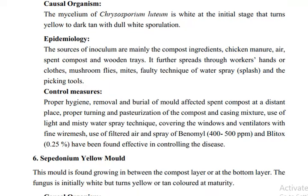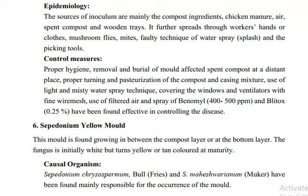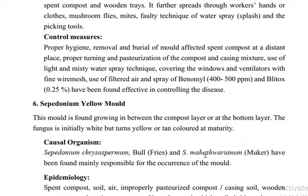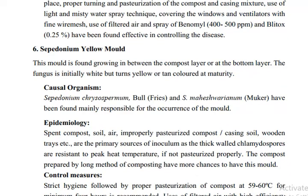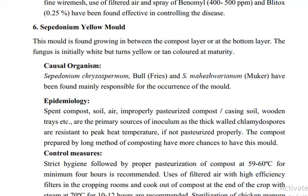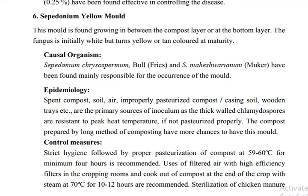Another yellow mold is Cepedonium yellow mold, whose causative organism is Cepedonium chrysosporium or Cepedonium maheshwaranium — a name of Indian origin. This mold forms a double layer within the compost, appearing between or below the double-layer region. It shows its coloration in improperly pasteurized compost.